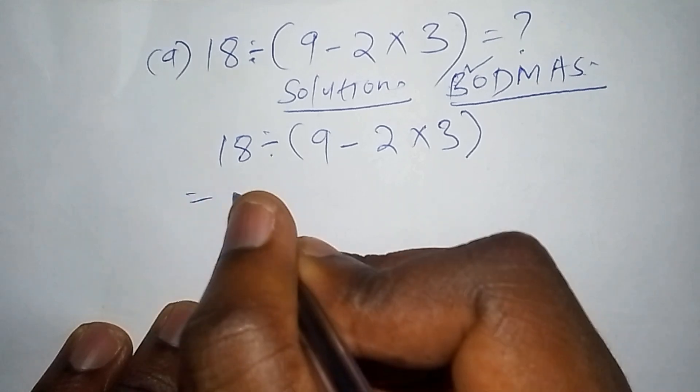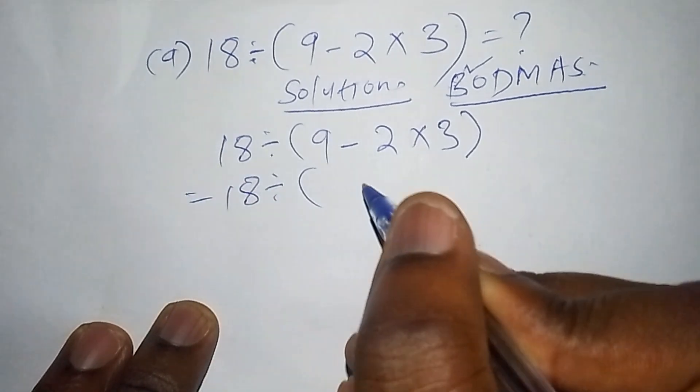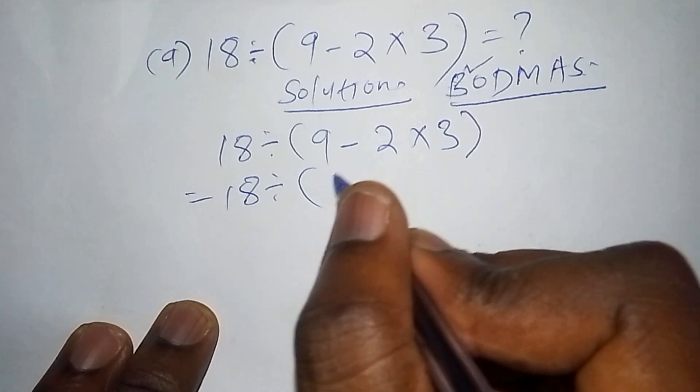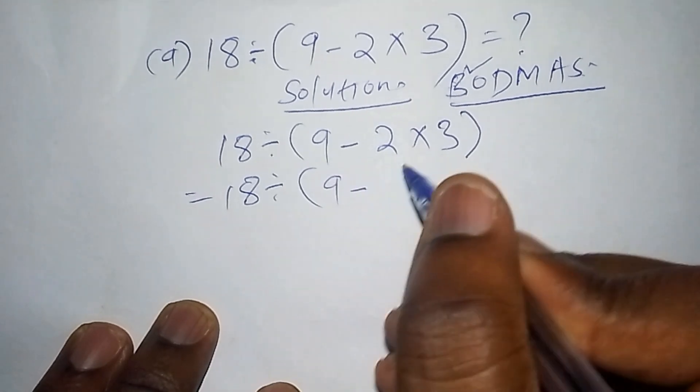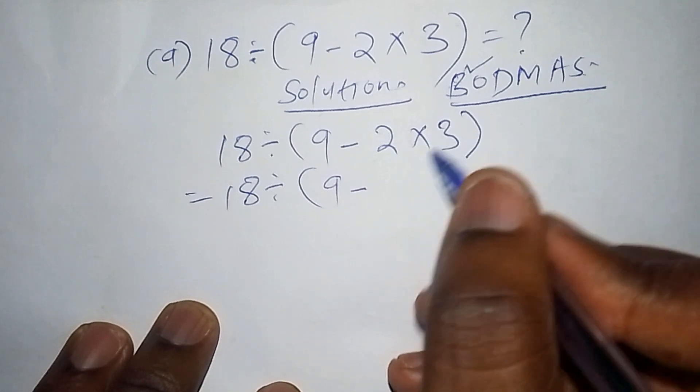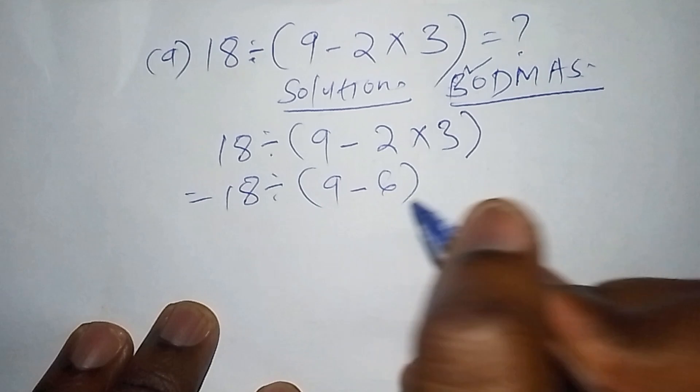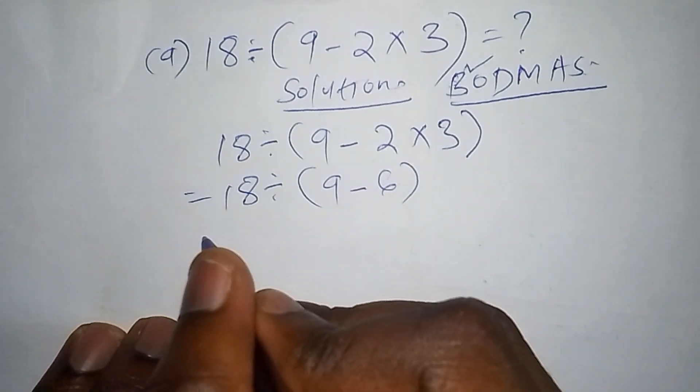So the first step, this one equals 18 divide by. You're supposed to work out this number here. We shall have 9 subtract from 2 multiply by 3, and 2 multiply by 3 is 6, so we shall have our 6 there. Then you close the bracket. We are still not yet through with the bracket.